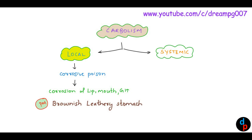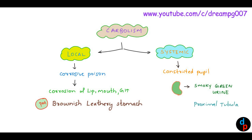Systemically, Carbolic Acid will lead to constriction of the pupil. It also affects the kidney — we will get smoky green urine, and there will be proximal tubular necrosis. Thus, Carbolic Acid poisoning affecting the kidney will lead to Carboluria.